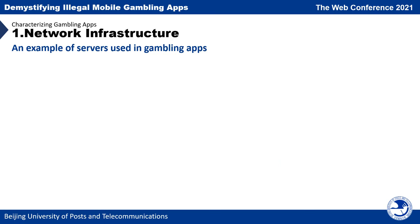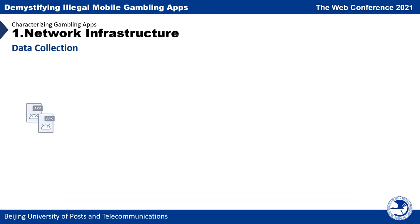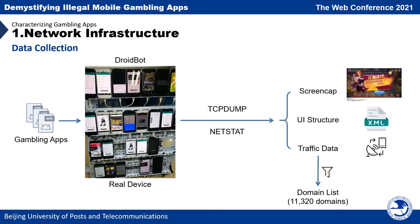The first is network infrastructure. We found that gambling apps usually use many different servers. A typical gambling app uses a number of different domains for many functions, such as data processing, resource loading, and gambling game main services. So we collected all the network traffic for gambling apps using Broadbot running on real devices. We used TCPDump to record the network traffic and netstat to distinguish the traffic from other apps. We also recorded screencap and UI information. After that, we filtered the domains with a domain list from common Android apps, and finally got over 10,000 domains.